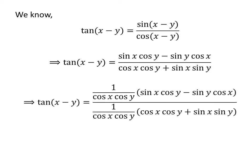As multiplying the numerator and the denominator of a fraction by a common factor does not change the value of the fraction, let us multiply the numerator and the denominator of every fraction by 1 upon cosine of x times cosine of y.